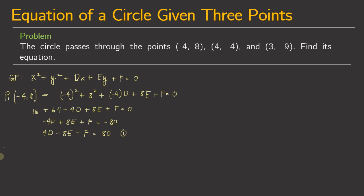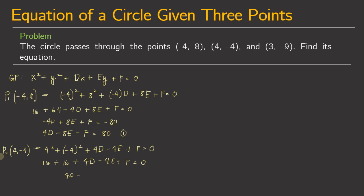For the second point, which is 4, negative 4, same process — we just substitute. So we have 4 squared plus negative 4 squared plus 4d minus 4e plus f equals 0. That gives 16 plus 16 plus 4d minus 4e plus f equals 0, so 4d minus 4e plus f equals negative 32. This is our equation 2.